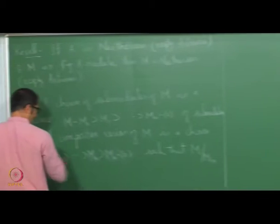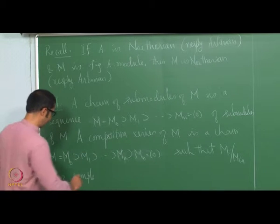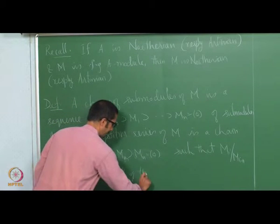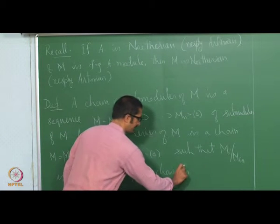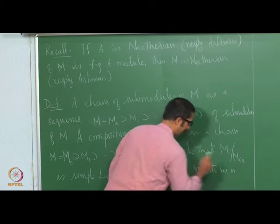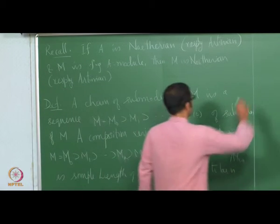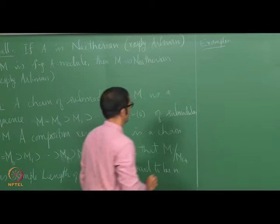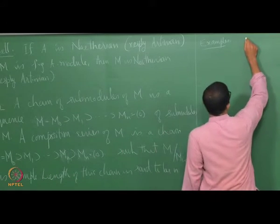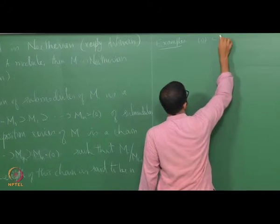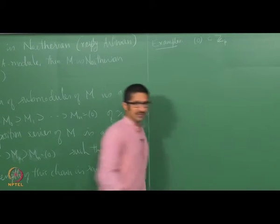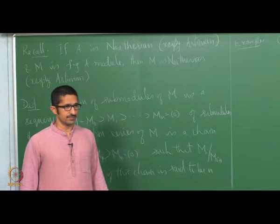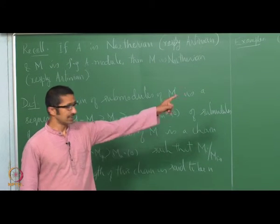The length of this chain is said to be n. Let us look at one or two examples. If the module itself is a simple module, then that is a composition series. For instance, Z_p is a simple Z-module, so this is a composition series.